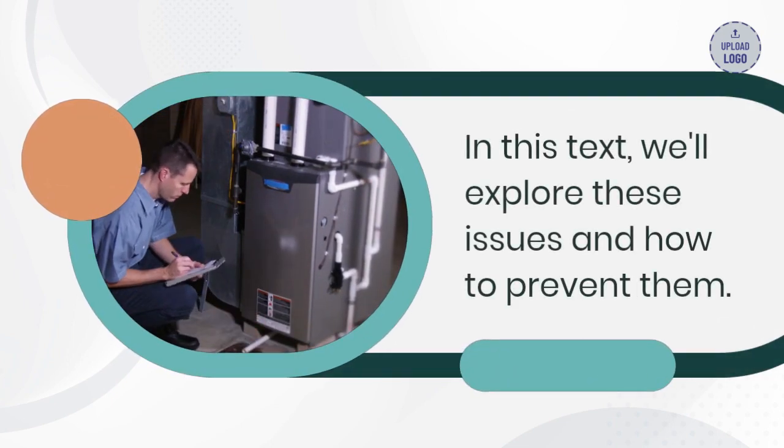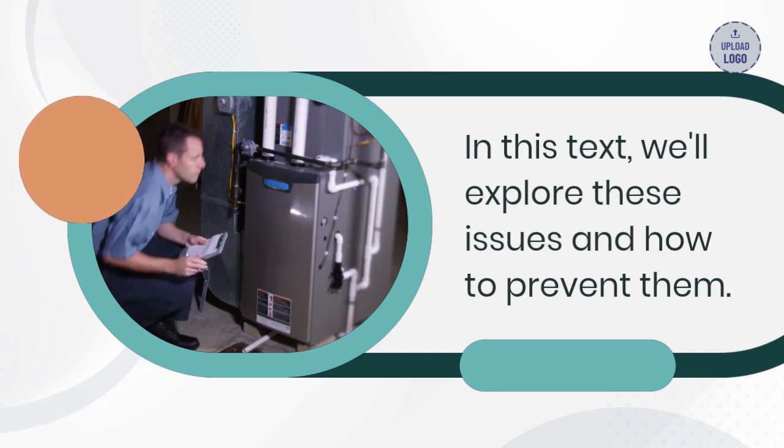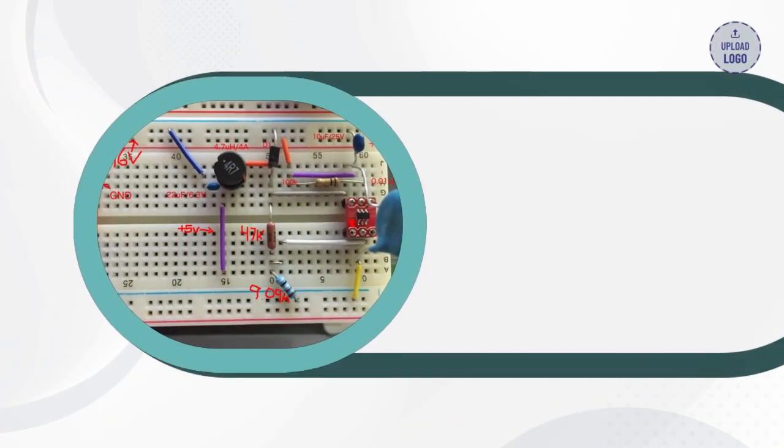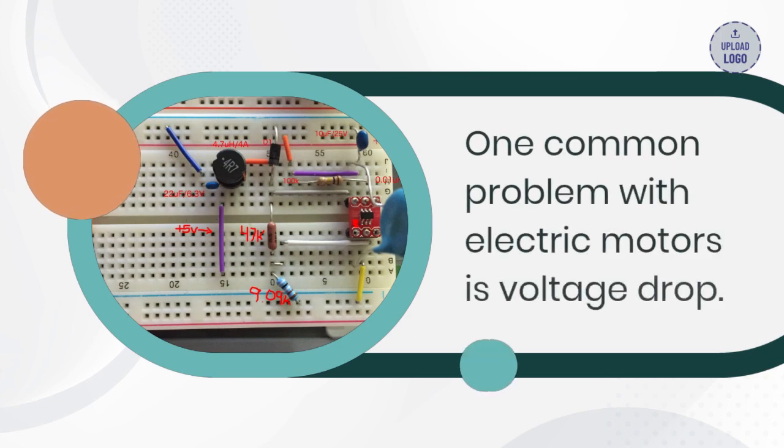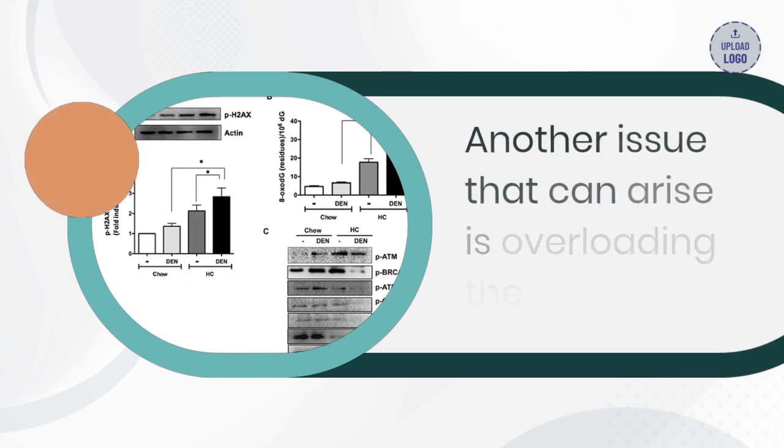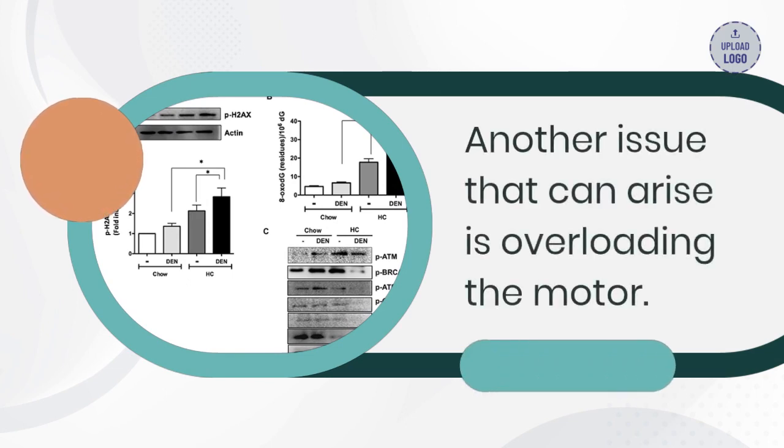One common problem with electric motors is voltage drop. This occurs when the motor is not receiving the proper amount of voltage, leading to a decrease in its efficiency and potential damage to the windings. To prevent voltage drop, ensure that the voltage supply is adequate for the motor's requirements.